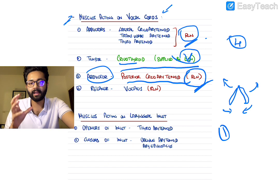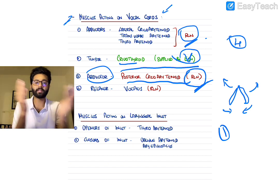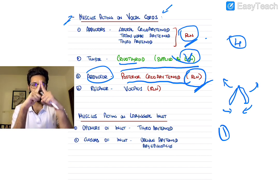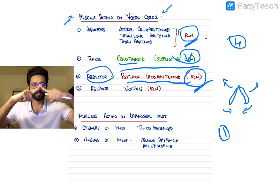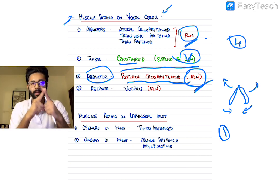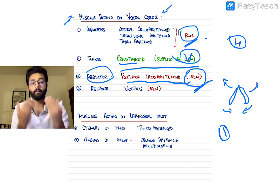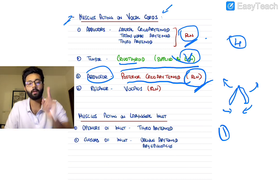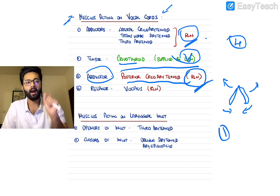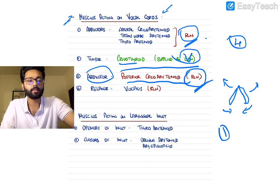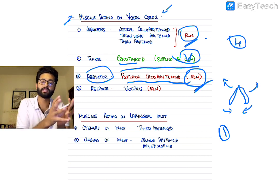When the recurrent laryngeal nerve is injured — particularly bilateral recurrent laryngeal nerve injury — the vocal cords lose their ability to split and get stuck in the median or paramedian position. This can lead to asphyxia, stridor, and breathing difficulties, which may be fatal and require emergency tracheostomy.